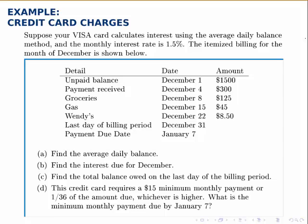For instance, on December 1st the unpaid balance is $1,500, and it's $1,500 on December 2nd and 3rd as well. Then on December 4th the unpaid balance drops to $1,200 because there was a $300 payment received. We could list out all the days from December 1st through December 31st, listing the balance for each day, add those up and divide by 31 — the number of days — and that would give us the average daily balance.